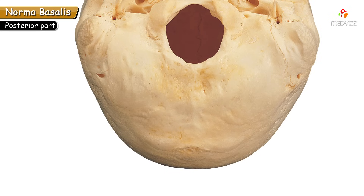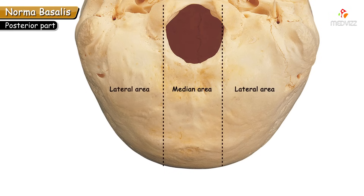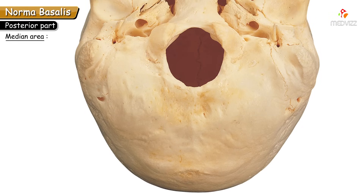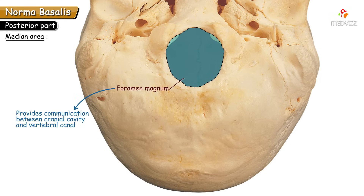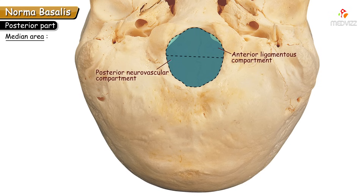For convenience, the posterior part is divided into a median area and two lateral areas. The median area is marked by the large ovoid foramen magnum — the largest foramen in the skull — which is the communication between the cranial cavity and the vertebral canal. To learn its contents, we divide it into an anterior ligamentous compartment and a posterior neurovascular compartment.